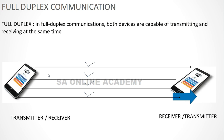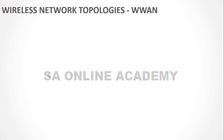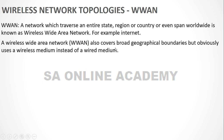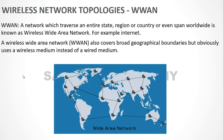Wireless topologies are categorized into four types. The first is Wireless Wide Area Network (WWAN). A network that traverses an entire state, region, country, or spans worldwide is known as a WWAN. It covers broad geographical boundaries but uses a wireless medium instead of a wired medium. The best example of a WWAN is the internet.